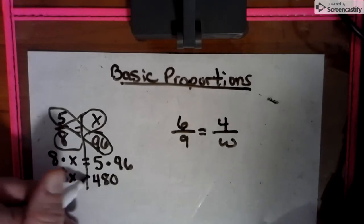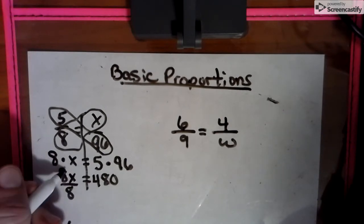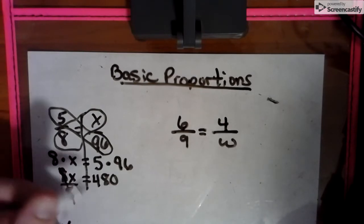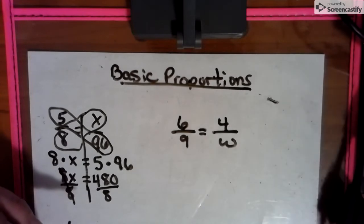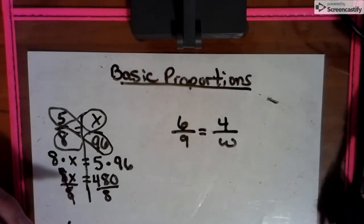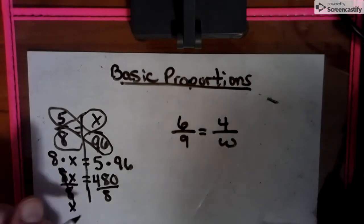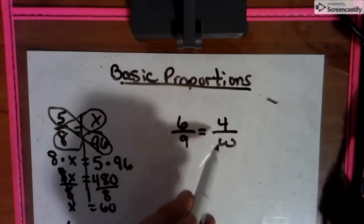And then we have to divide by the number touching the letter because this means multiplication. We have to solve it with division. We always have to solve it with its opposite. So 8X divide by 8 cancels out. We divide this side by 8. And so we have 480 divided by 8. And we will get 60. So X equals 60.